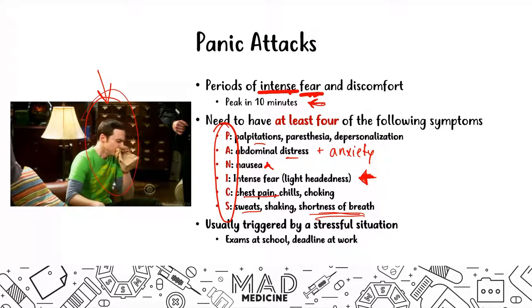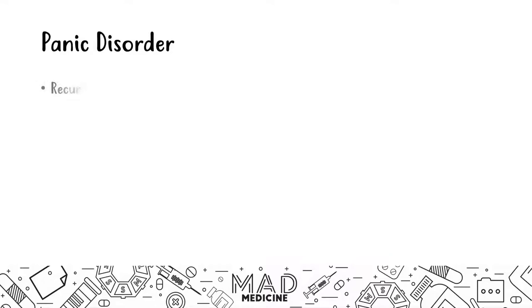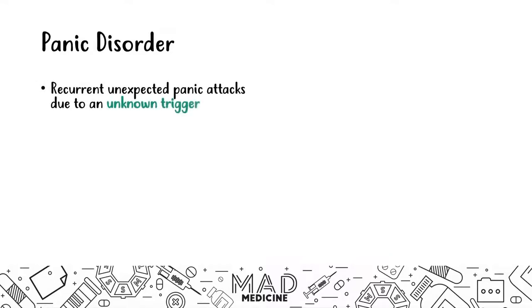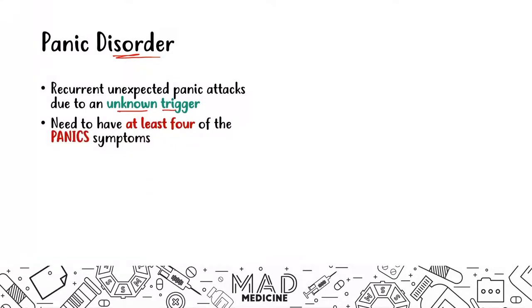Now that we know what a panic attack is, let's talk about the actual topic of today's video: panic disorder. Panic disorder is when someone has recurrent, unexpected panic attacks due to an unknown trigger — that's the main distinction. A panic attack by itself usually has a known, identifiable stressful cause, whereas with panic disorder, patients experience panic attacks but we don't know what the trigger is. They need to have at least four panic symptoms as the systemic manifestation of their fear.